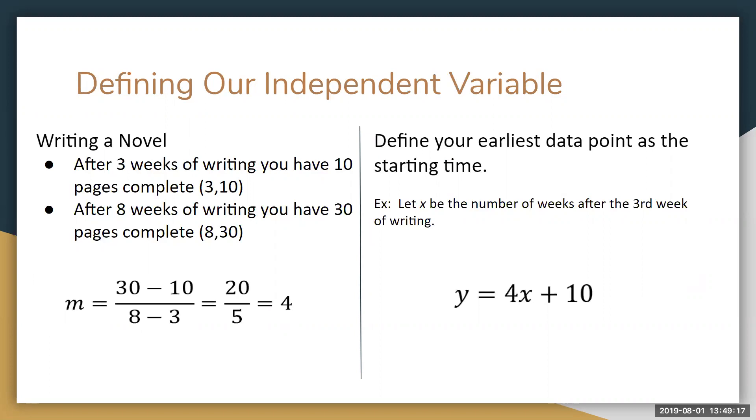For example, our first data point was three weeks after three weeks of writing. So when we build our model, we'll treat that third week as our starting point and measure x as the number of weeks after the third week. If we do this, we can then use our first y value of 10 as our initial value, and immediately we have our model: y equals 4x plus 10.